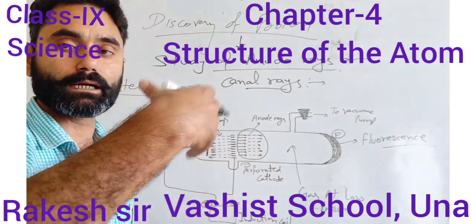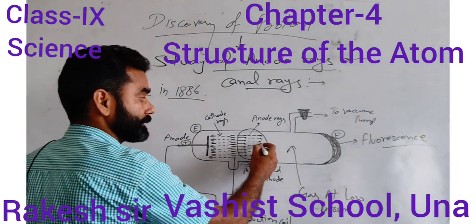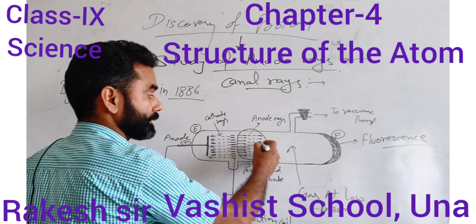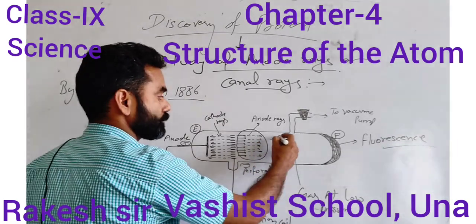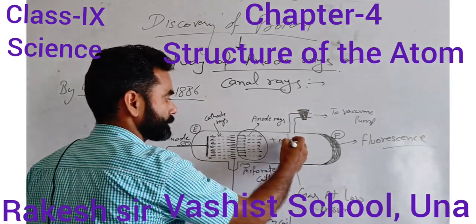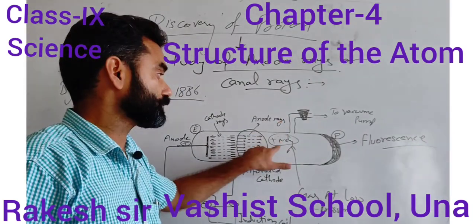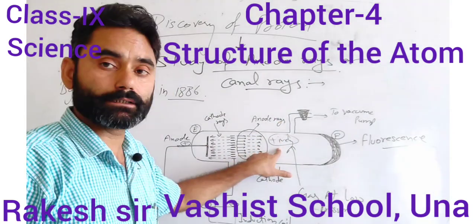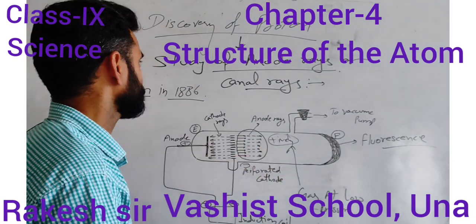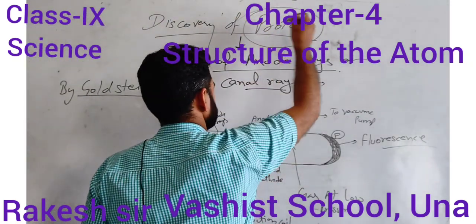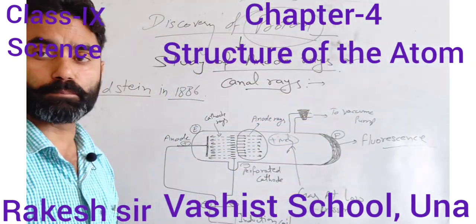The movement of these particles takes place away from the anode — that is, towards the cathode terminal. When we study these particles, they consist of positively charged particles. These positively charged particles were later named.